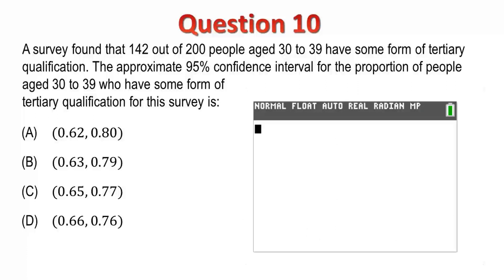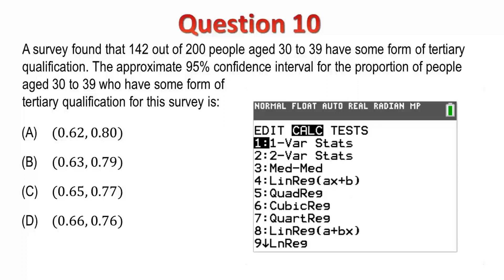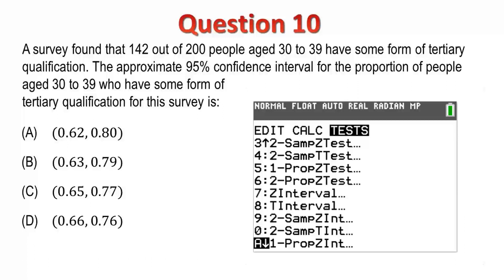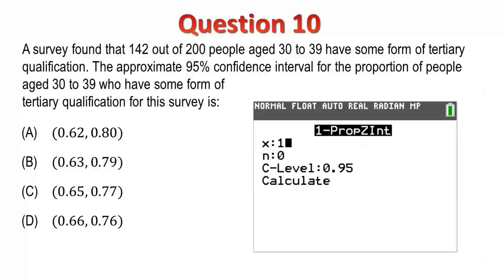We are provided with a proportion for just one sample, so we use a one proportion test and the normal distribution. To determine my confidence interval, I'll select Stat, arrow across to Tests, then arrow down to choose one proportion Z interval. I'll enter the observed value of 142, and the quantity of people, 200, and the default confidence interval of 0.95. We see the confidence interval is 0.647 to 0.772, so I'll select Option C.